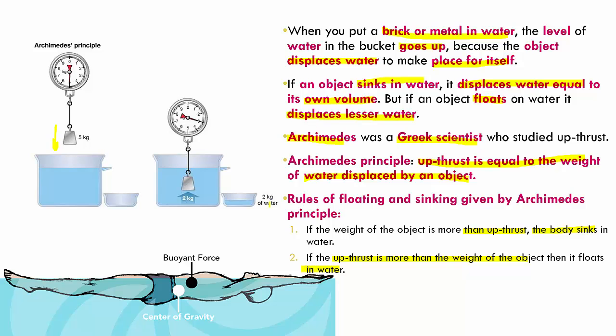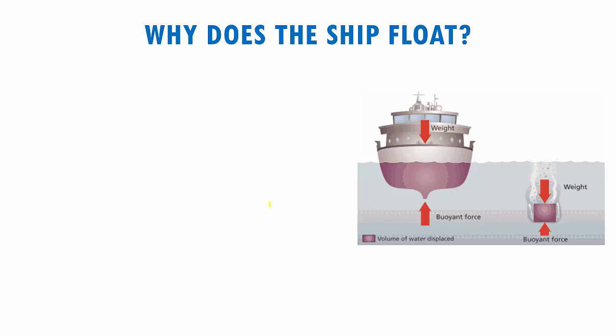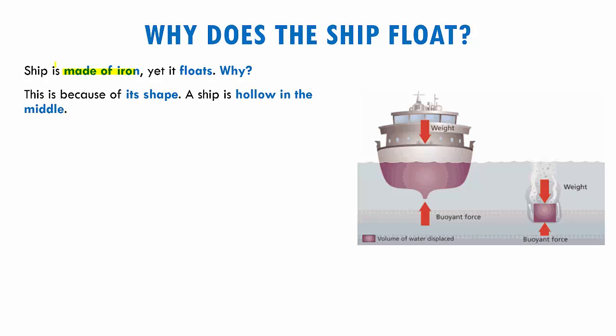So let us come back to our basic question. We've spoken about Archimedes and his principle, what is buoyancy, what is upthrust, and the rules of floating and sinking. Now why does the ship float on water? The ship is made of iron, yet it floats. This is because of the shape of the ship — it is hollow in the center, and that is why it floats.